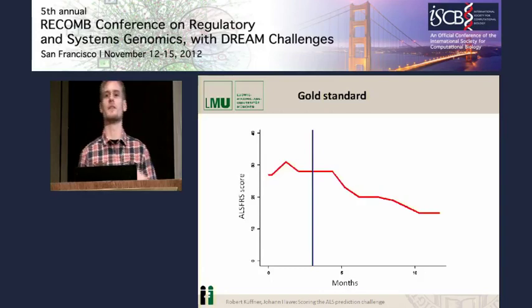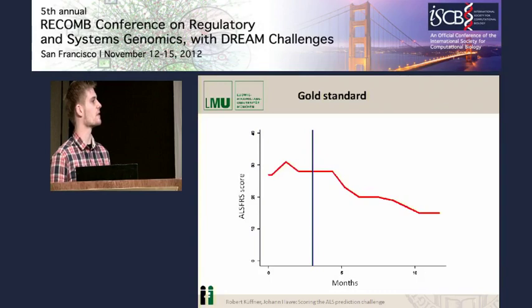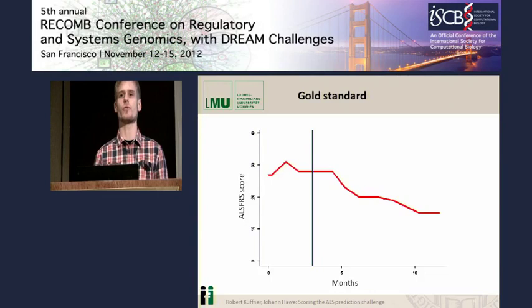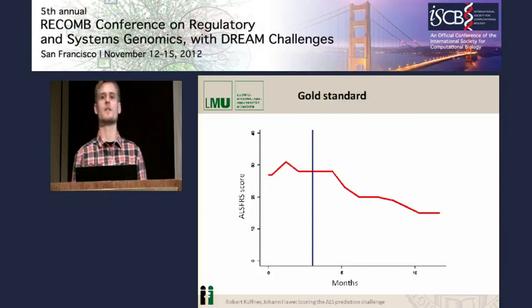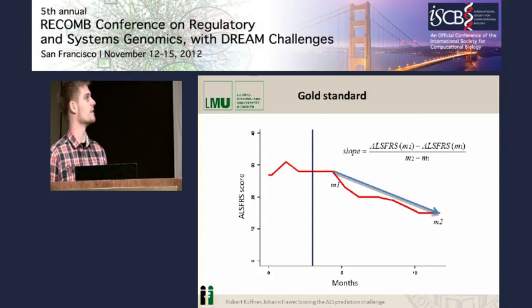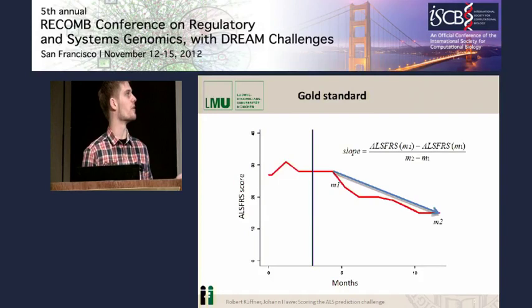As we can see here, we have a cutoff set at three months, as Nita explained already. We use the data beyond three months in order to calculate the gold standard and define the disease progression of the patients, and we use the first three months for their actual predictions. We calculate the disease progression by simply calculating a slope via dividing the difference in ALS FRS values by the difference among the values we assessed.